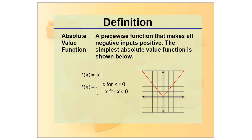The absolute value function f of x equals mod x is a piecewise function that makes all negative inputs positive. The graph of mod x is V-shaped.